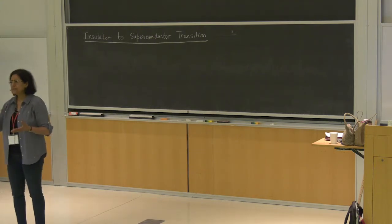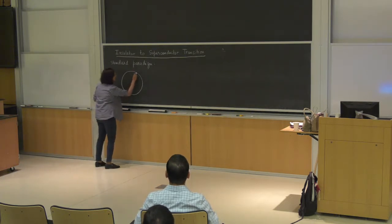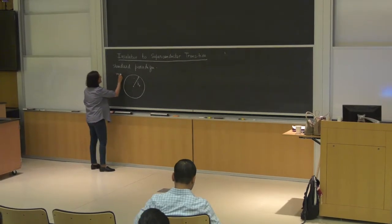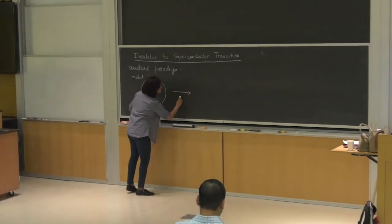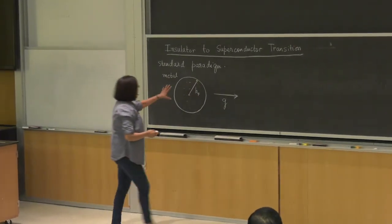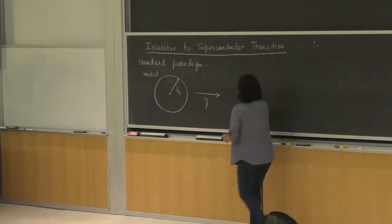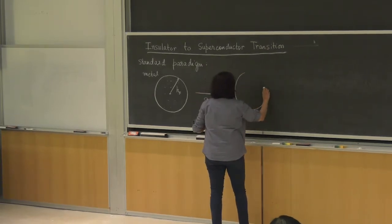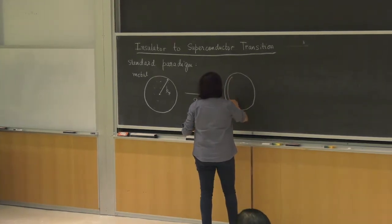Much has been done on this topic. The standard picture: you start with a metal up to some wave vector k_F, then turn on some attraction — some coupling G. The smallest coupling G in three dimensions would lead to an instability of the Fermi surface, and you would get a gap in the spectrum.